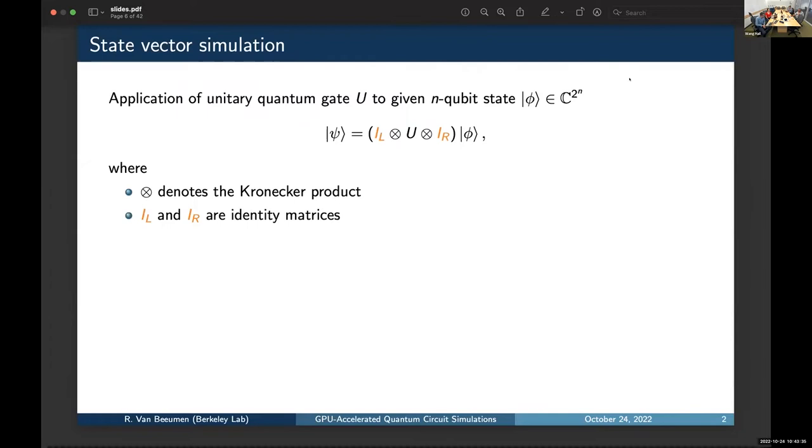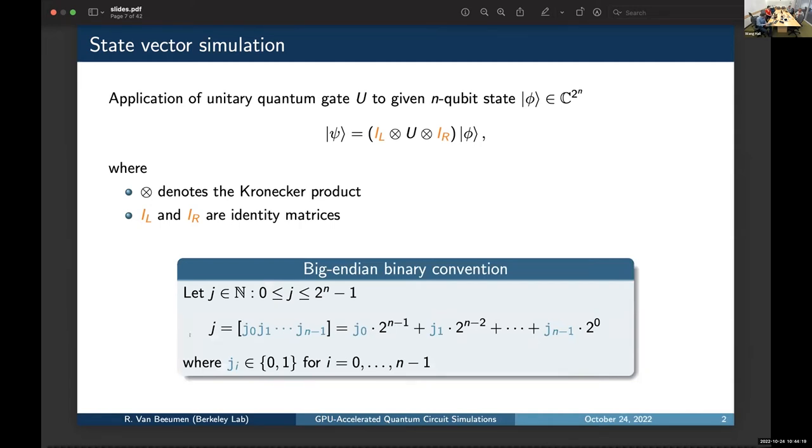So, today I'm going to talk about state vector simulation, and how we do that efficiently in QCLab++. How do we apply a quantum gate to a given n-qubit state, which is a vector in effect, a space of 2 to the n? So, mathematically speaking, this corresponds to the following Kronecker product, where we have the quantum gate U, which is a unitary matrix, and then on the left and the right, we have some Kronecker products with the identity matrices. I'm going to explain how we can do that very efficiently by calculating indices through bit operations, and for that, we will use the big-endian binary convention.